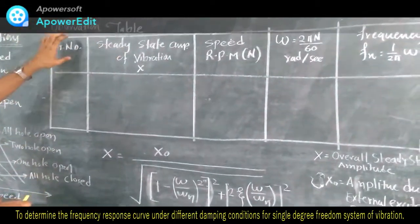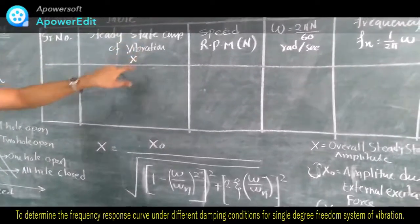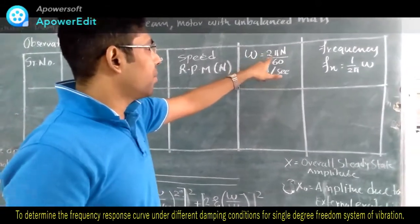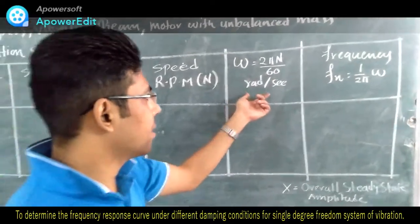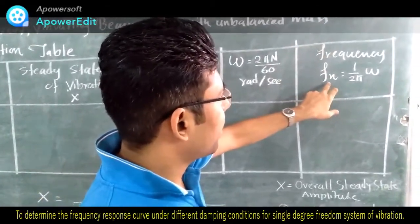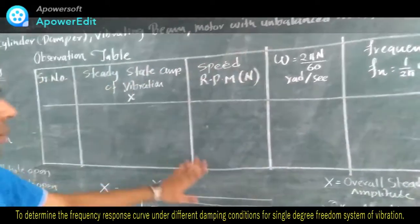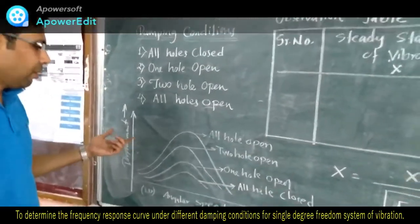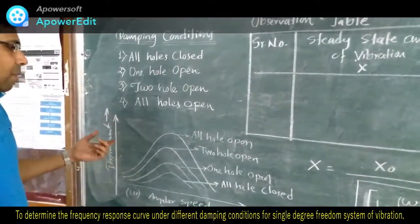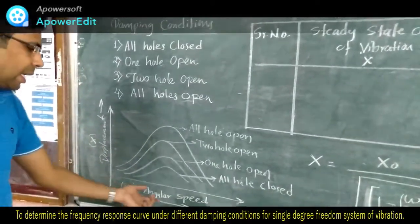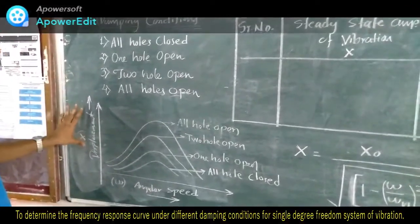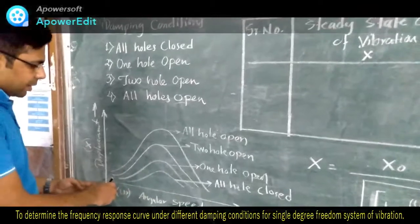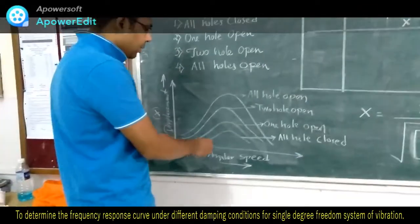We are going to plot a table in which the first column will be serial number, then steady state amplitude X value, then speed in RPM, then angular speed ω in terms of 2πN/60 in radians per second, and then finally frequency fₙ which equals 1/(2π) times ω. Through the graph we are able to focus upon the concept — understanding how increasing angular speed affects the steady state amplitude or displacement.